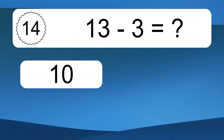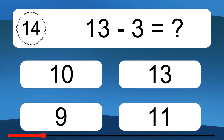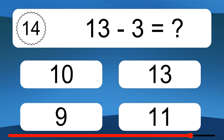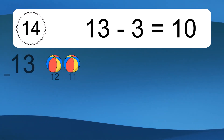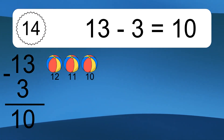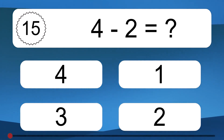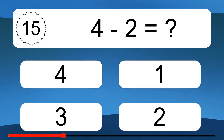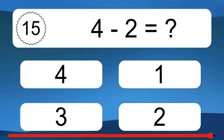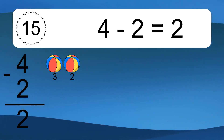13 minus 3 equals what? 13 minus 3 equals 10. Let's count it: 12, 11, 10. 4 minus 2 equals what? 4 minus 2 equals 2. Let's count it: 3, 2.